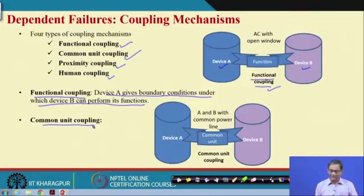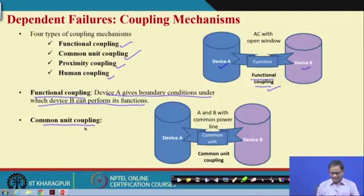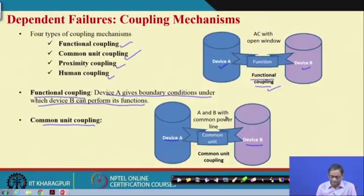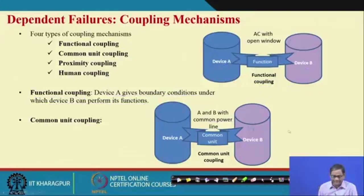The second type is common unit coupling. Suppose there are two devices, A and B, both connected to a common power line. If the power line is disconnected or the power supply is switched off, both units will fail to work. They are coupled through the common power line — if power is not available, neither will work.